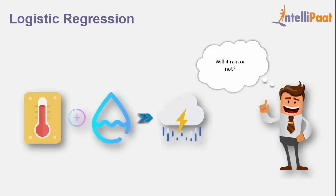For example, we're trying to determine the probability of rain based on independent variables like temperature and humidity. In other words, we are choosing a category — yes or no — for the question 'Will it rain?' This is logistic regression.